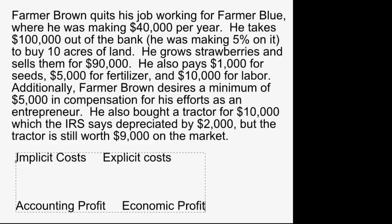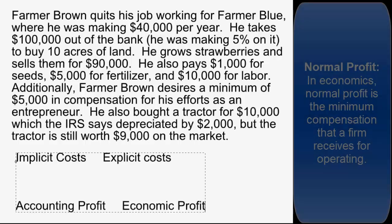He also pays $1,000 for seeds, $5,000 for fertilizer, and $10,000 for a worker to help him pick the strawberries. Additionally, Farmer Brown desires a minimum of $5,000 in compensation for his efforts as an entrepreneur owning this business.